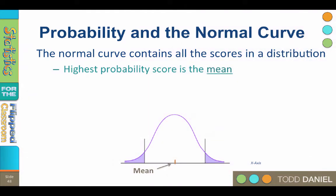The normal curve is a graph of all of the scores in a distribution. The most common, highest probability score is the mean. Notice the mean on the x-axis. The curve directly above it is the highest part of the curve. Now the curve represents relative frequency, so the highest part of the curve is also the part with the highest frequency.